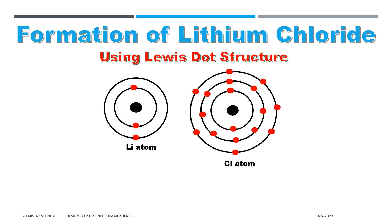This is the electronic configuration, or orbital diagram, of lithium atom. For Lewis dot structure, we have to write down the symbol of the element and dots which denote the valence electrons. So for lithium atom, this is the Lewis dot structure: the symbol of lithium and one dot, which represents the one valence electron.